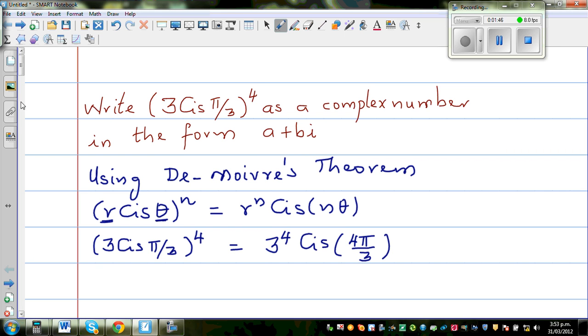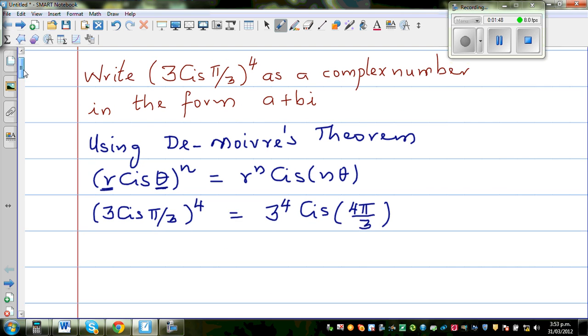And you want to change this into a plus bi form. Now cis is an abbreviation for cos plus i sine. So this is 81 times cos 4π/3 plus i sine 4π/3.